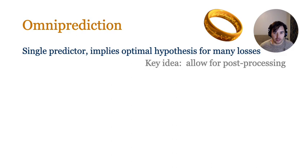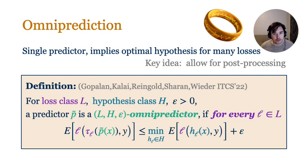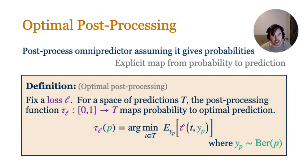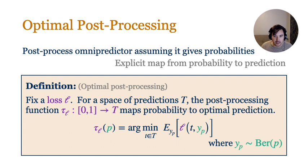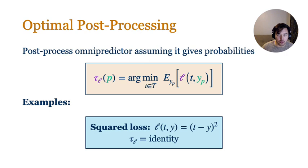The key insight of omnipredictors is to allow for post-processing of the predictions. Gopalan, Kalai, Rheingold, Charan, and Vieter proposed the notion of an omnipredictor. Parameterized by a collection of losses, an omnipredictor is a single predictor that achieves the loss minimization guarantee for every loss in the collection after applying a simple post-processing on the prediction. We post-process the predictions as if they tell us the probability of the outcome Y. Formally, we define the post-processing tau sub L as an argmin over the predictions — a simple univariate optimization completely determined by the loss L and independent of our chosen predictor. If we pass in the true probability, we obtain the optimal prediction under L.